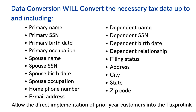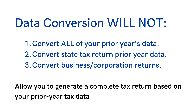Additional converted data includes Spouse Personal Information, Dependent Details, Filing Status, Taxpayer's Full Address, Taxpayer's Home Phone Number, and Taxpayer's Email Address. This allows direct implementation of prior year customers into the TaxProLink Professional Tax Software.